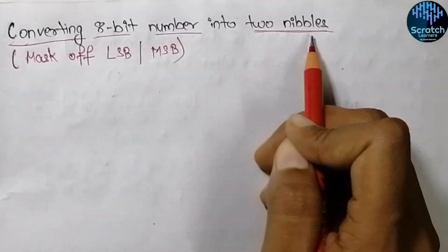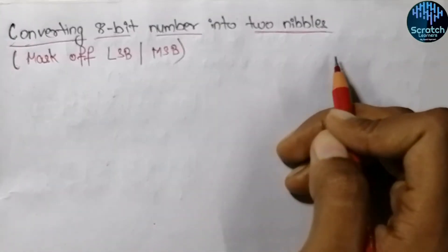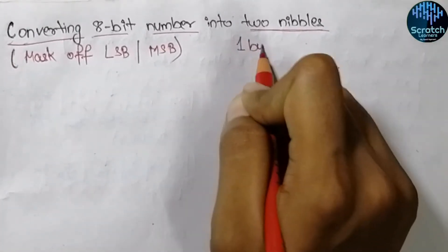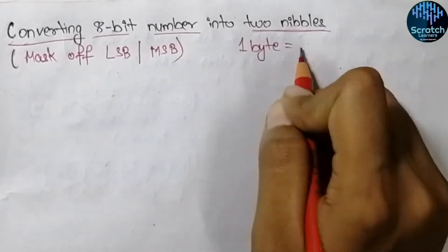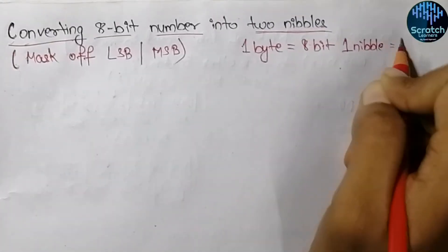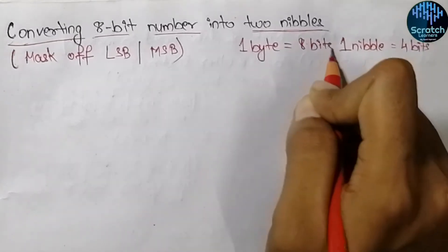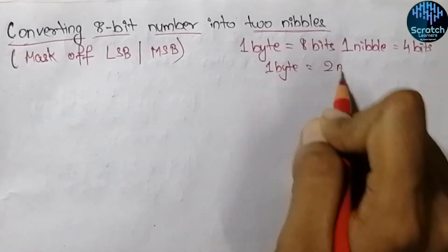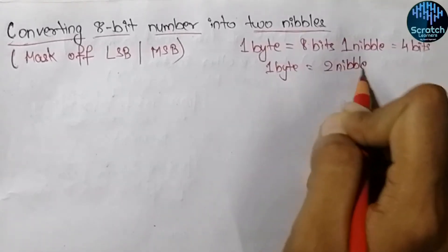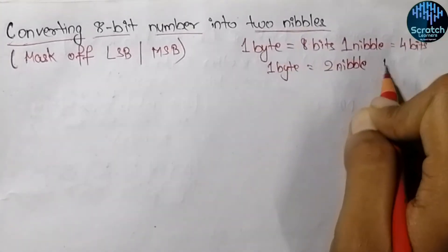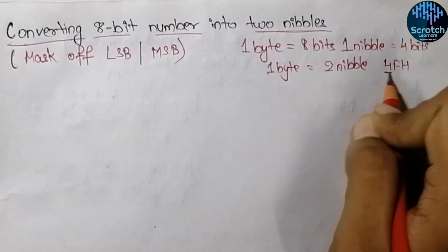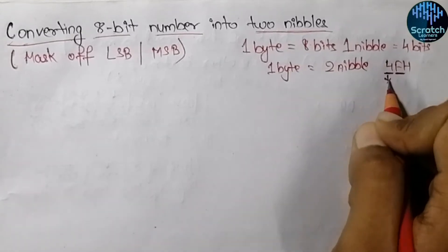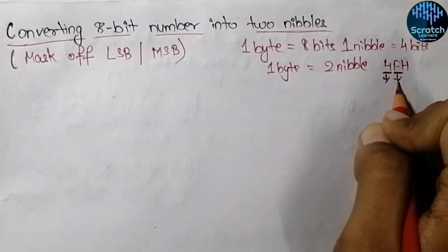I think you know what is a nibble, but if you don't, let me explain. We have an 8-bit number which is known as a byte, but a nibble consists of 4 bits. So we can say that 1 byte has 2 nibbles. If we take any 8-bit number like 4F hex, the most significant nibble is known as the upper nibble and the least significant nibble is known as the lower nibble.